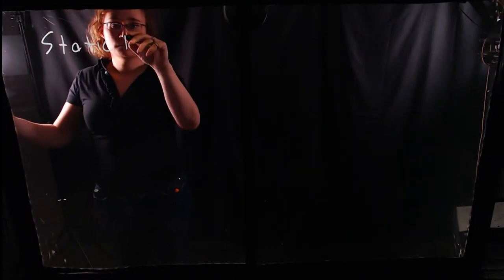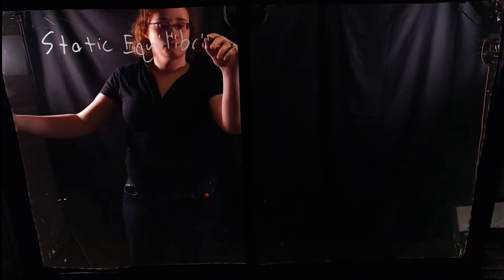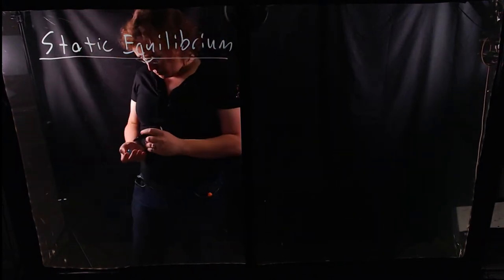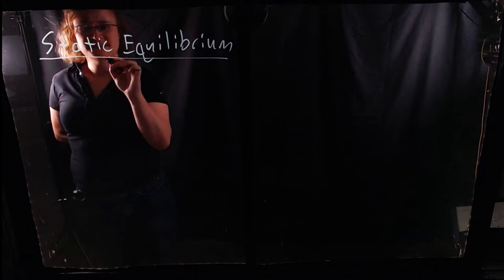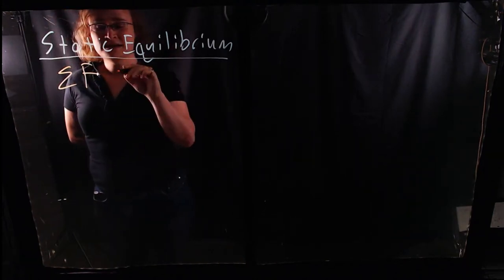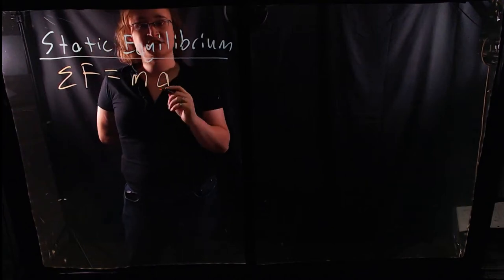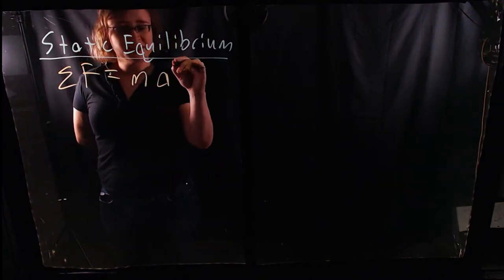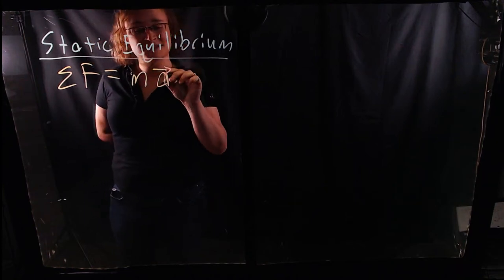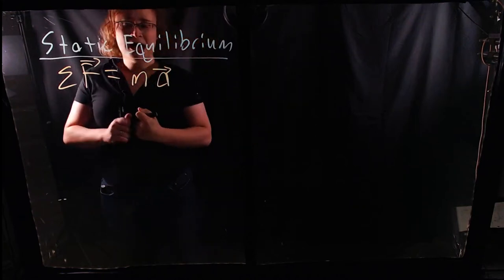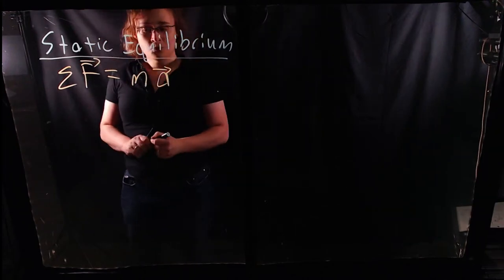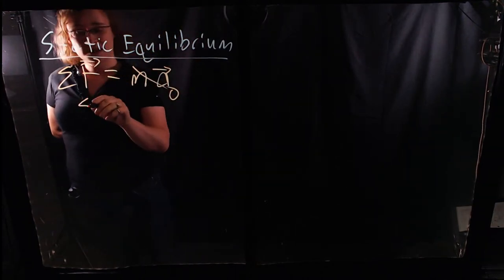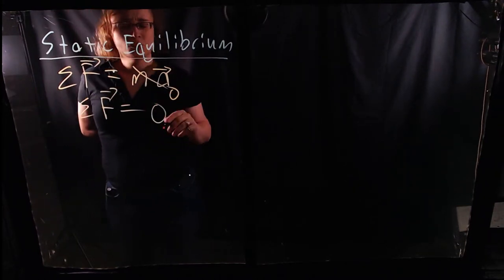So let us consider static equilibrium. This comes right out of Newton's laws — Newton's second law — which states that the sum of forces on a body is proportional to its mass times its acceleration. We can express this as a scalar equation for a simple system, or as a vector equation. For static equilibrium — for structures that are ideally not moving — we set the acceleration side of the equation equal to zero, and say the sum of force vectors on a structure equals zero.